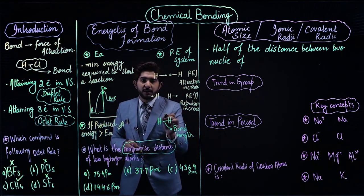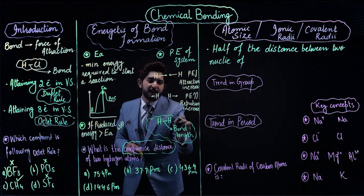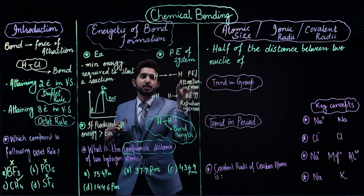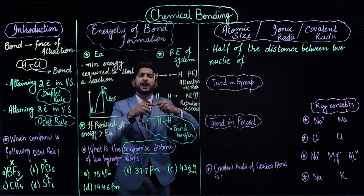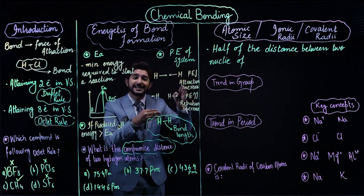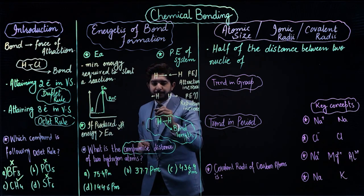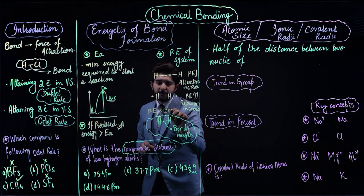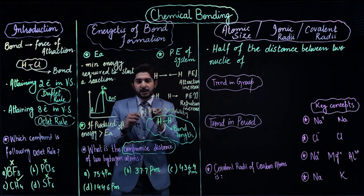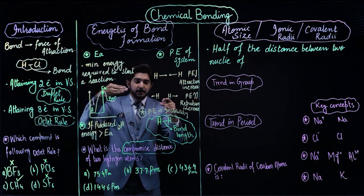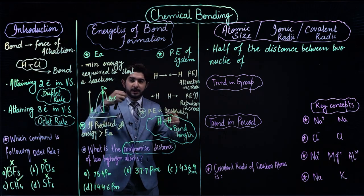Hydrogen atoms attain a compromise distance where repulsive forces are slightly reduced and attractive forces are dominant enough to make a bond. When bond formation occurs, potential energy decreases. If potential energy increases, instability increases. The key concept is: potential energy is directly proportional to instability. If potential energy decreases, the molecule becomes more stable; if it increases, stability decreases.